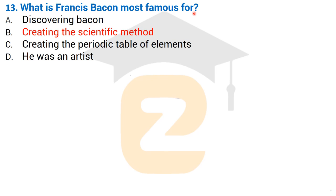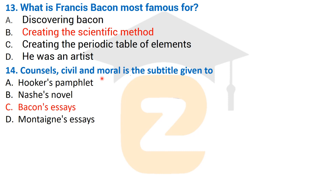Question number 13: What is Francis Bacon most famous for? The correct answer is Option B — creating the scientific method. He was most famous in the history of English literature as the creator of the scientific method. Also, 'Counsels Civil and Moral' is the subtitle given to Francis Bacon's Essays, published in three editions, the first in 1597.